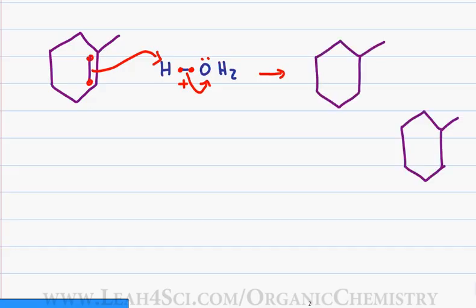We'll start at the tertiary carbon 1, 2, 3, 4, 5, 6. After breaking the double bond, I have the option to place the hydrogen in the tertiary position, giving me a carbocation in the secondary position or the hydrogen secondary and the carbocation tertiary.